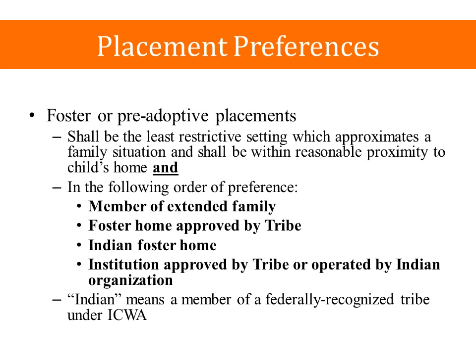ICWA provides two separate sets of placement preferences — one for foster care placements and one for pre-adoptive placements. For foster care placements, the placement shall be the least restrictive setting approximating a family situation and within reasonable proximity to the child's home. Within the following order of preference: a member of the extended family, a foster home approved by the tribe, an Indian foster home, or an institution approved by or operated by an Indian organization. For purposes of ICWA, Indian means a member of a federally recognized tribe.